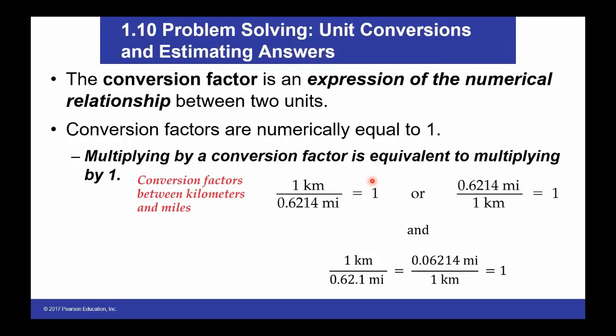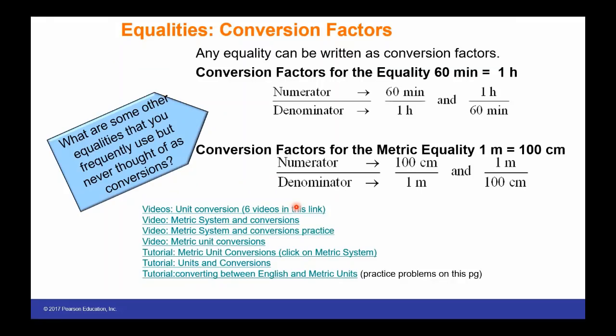Because they are equal, the fraction equals one. We can use these conversion factors because we can multiply any number by one without changing its value. Conversions are equal to one, so multiplying by them does not change the quantity.